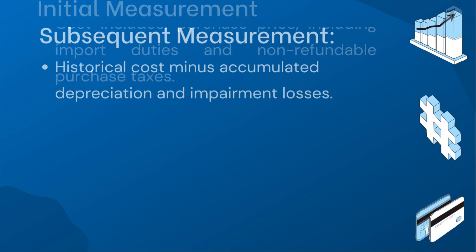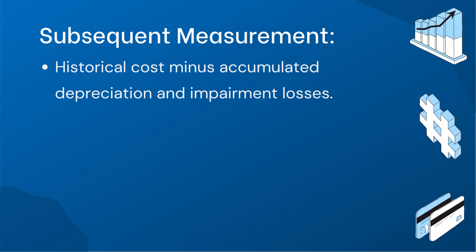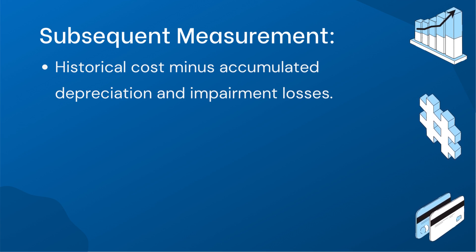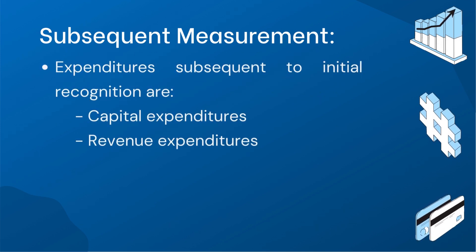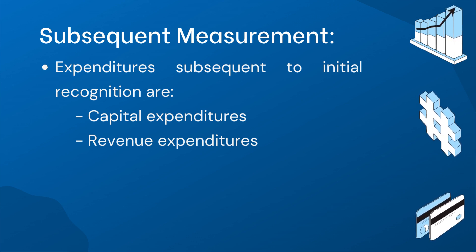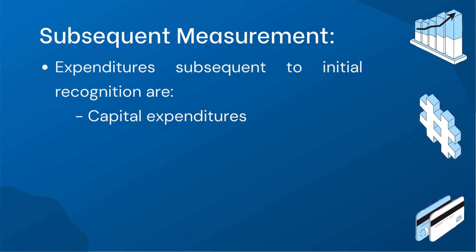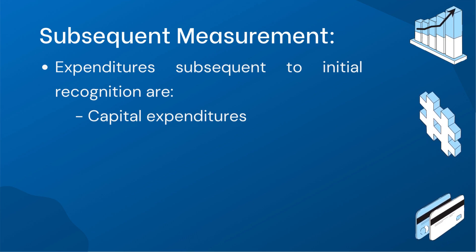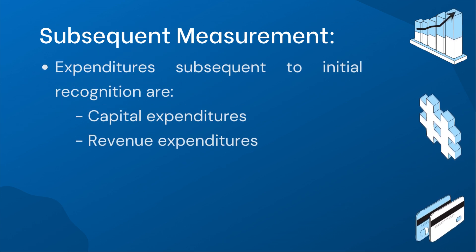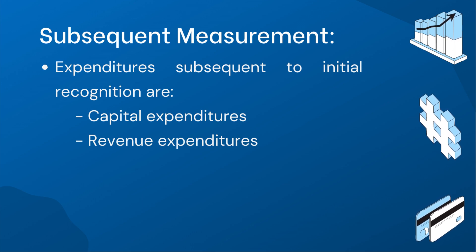After the initial measurement, the subsequent measurement of PPE involves determining its carrying amount. This carrying amount is calculated by subtracting accumulated depreciation and impairment losses from the asset's historical cost. However, expenditures incurred after the initial recognition of PPE are classified as either capital expenditures or revenue expenditures. Capital expenditures are investments that enhance the asset's quality, extend its useful life, or increase its output — these are capitalized at cost, meaning they are added to the asset's carrying amount. Revenue expenditures, on the other hand, are regular expenses that maintain the asset's normal service capacity and are expensed as incurred.